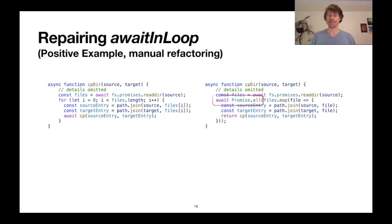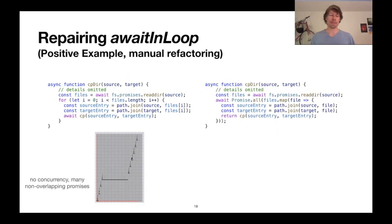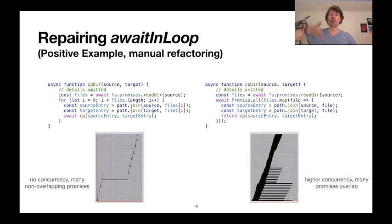This is actually manifest in the visualization. On the left, the old cpdir has these disjoint boxes of promises. On the right, the refactored version has many more promises that are vertically stacked — a lot more concurrency because more promises overlap in their lifetimes.